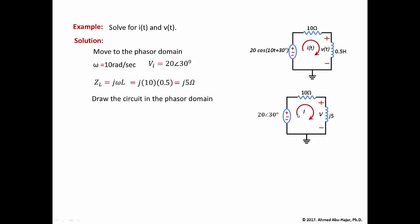The current changes from I(t) in the time domain to a phasor current — a complex number with magnitude and phase. The voltage across the inductor also becomes a phasor voltage V with a magnitude and phase. In the phasor circuit, the inductor's impedance is the imaginary value j5.